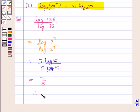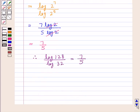Therefore, we have log 128 upon log 32 is equal to 7 upon 5. This is our final answer.